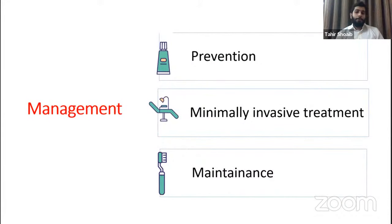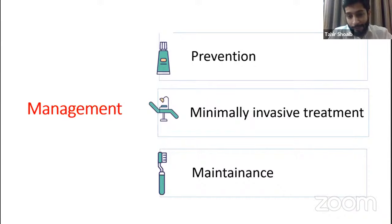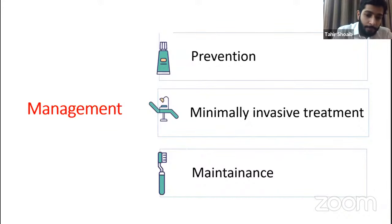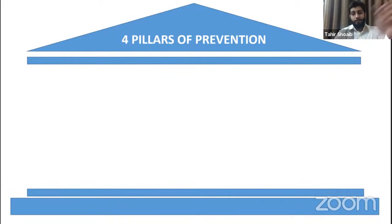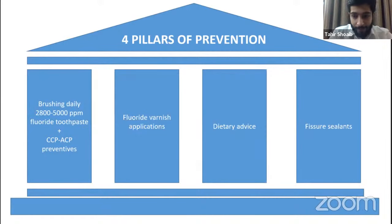Normally I like to divide my management into three main phases. For these children, my main focus always is enhanced prevention, and this is what sets a pediatric specialist apart from other dentists. Once prevention has been established, I like to treat patients with minimally invasive protocols rather than being an interventionist. And then, of course, a good maintenance plan is very important, especially for such patients. In terms of our enhanced prevention protocol, I'd really like to focus on what I call the four pillars of prevention, which includes brushing, fluoride varnish applications, good diet, and lastly, fissure sealants. I'll try and talk about each of these pillars one by one.